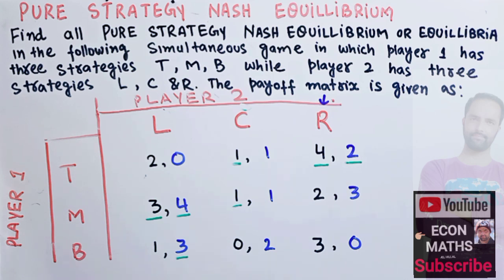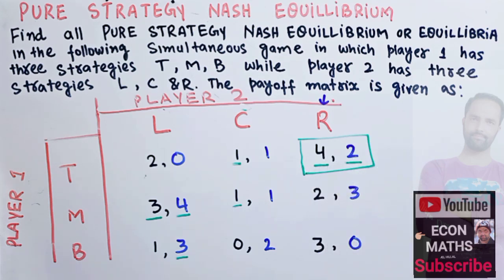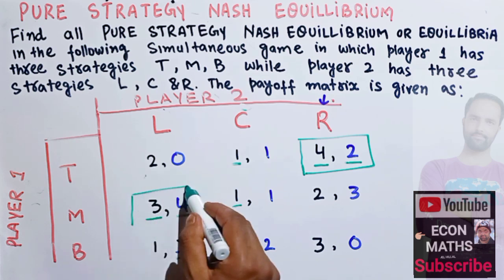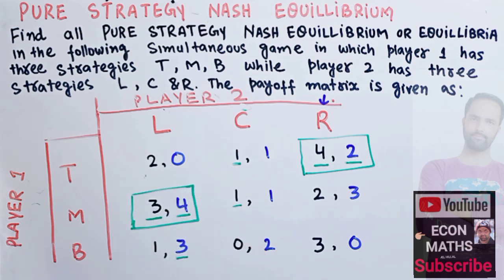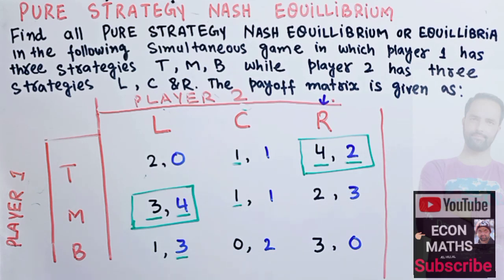The Nash equilibrium strategies are found in those cells where both numbers are underlined. We can see that two cells have both elements underlined. We therefore have multiple Nash equilibria — the plural of equilibrium is equilibria — so we identify the pure strategy Nash equilibria from these cells.